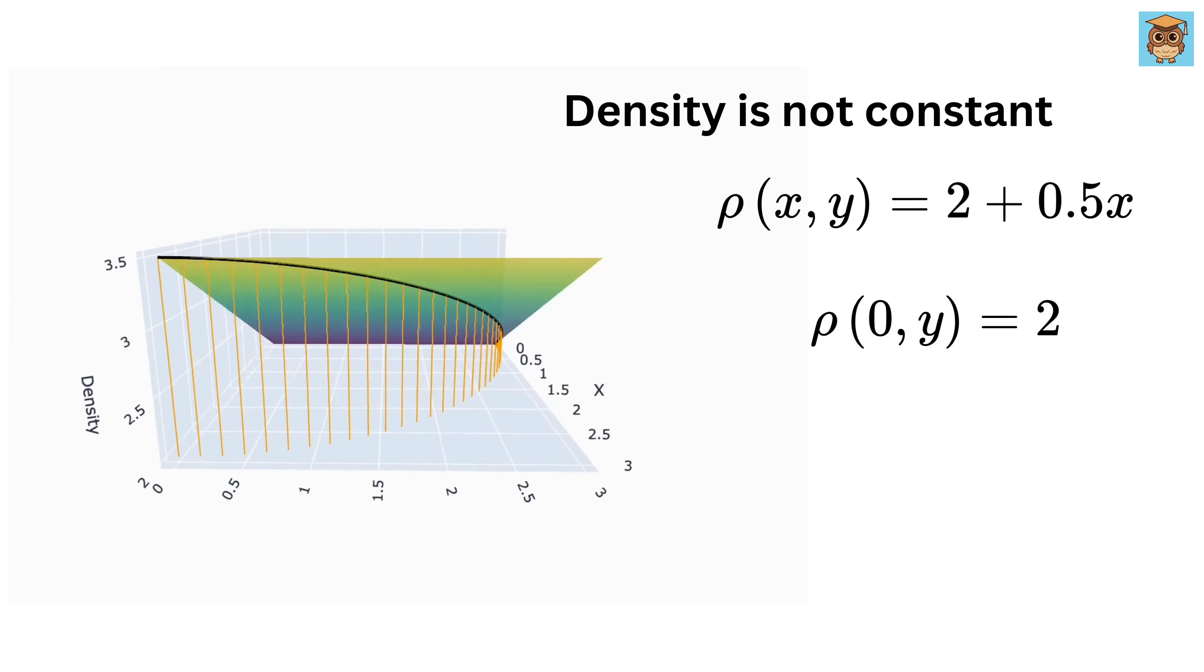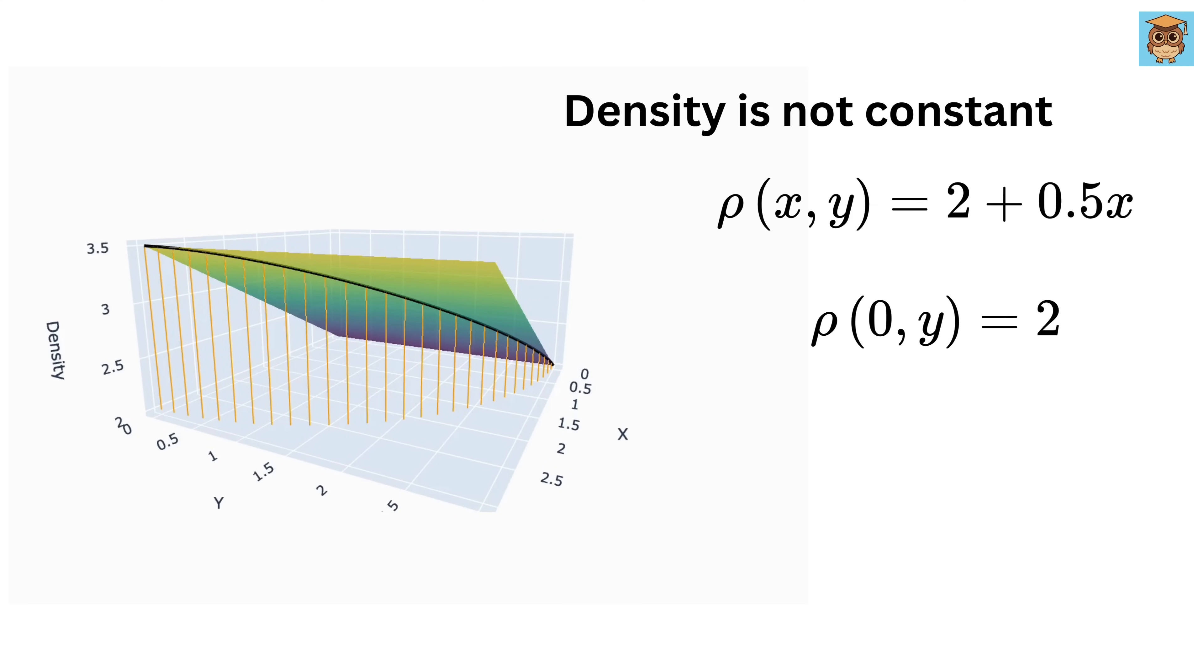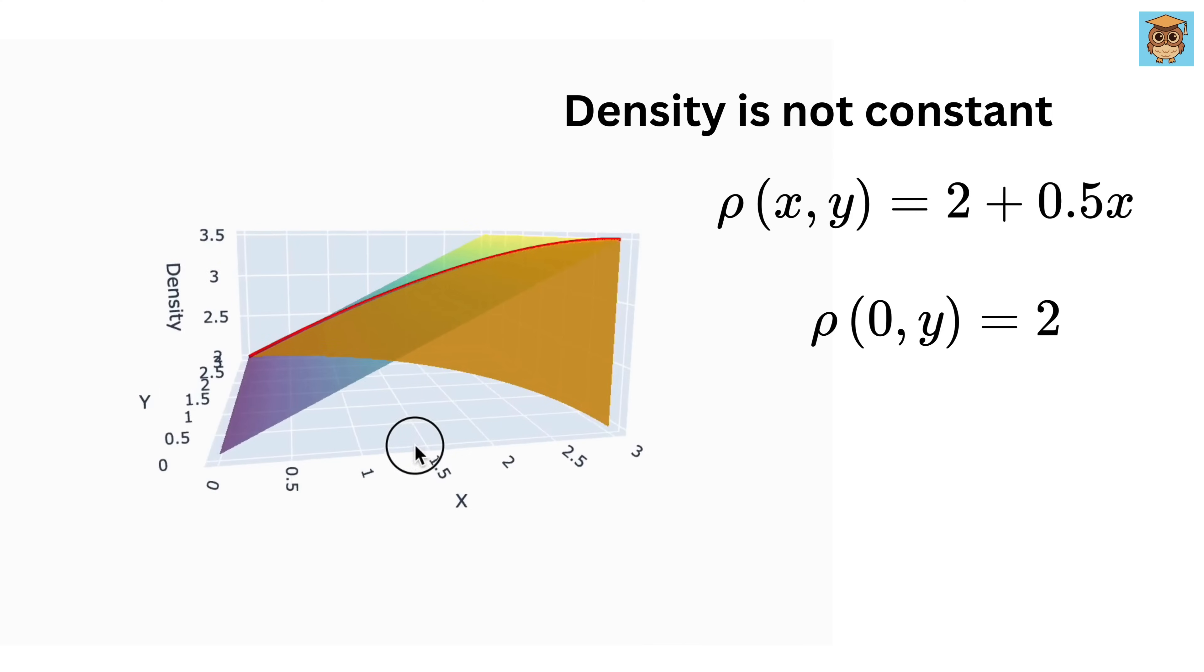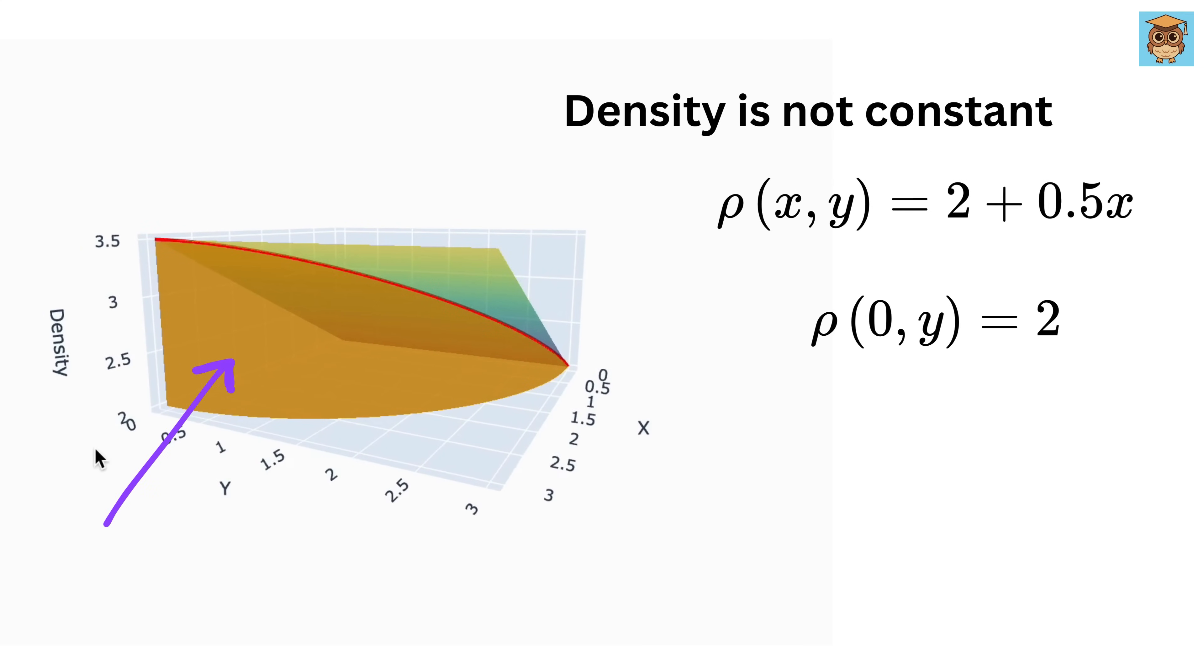Now, what do you think these orange vertical lines will represent? Yes, right! They are the density values of the wire at a point on the curve. So at this point on the curve, the density is this, and at this point, it is this. And this is how our mass distribution will look like, this orange ribbon. So this means our mass will be more here, and it will be less here.